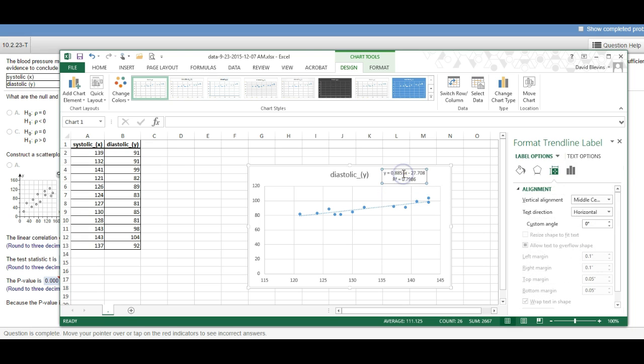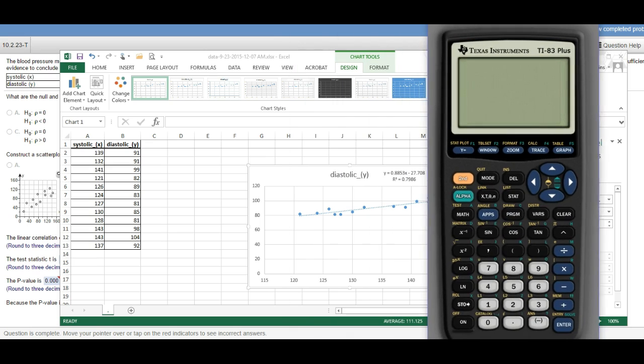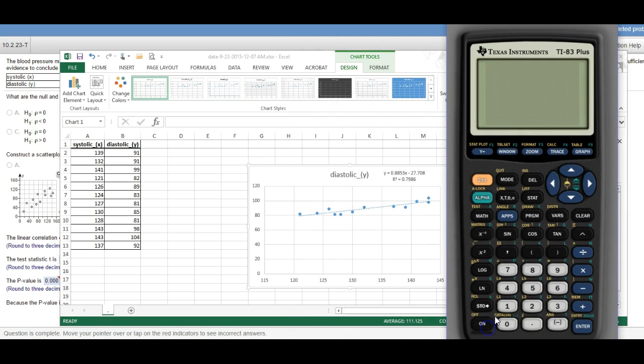And then when you add your trendline option over here, just scroll down and do display equation and r squared. All right, now this is r squared, so if you wanted r you'd have to take the square root of that. So 0.7986, square root of that is roughly 0.894.